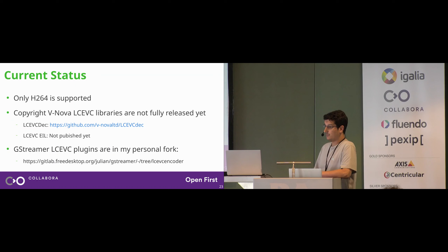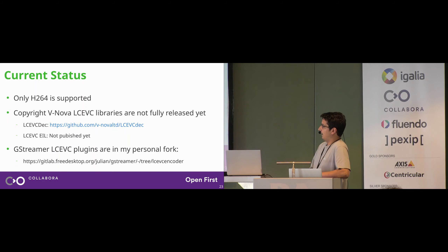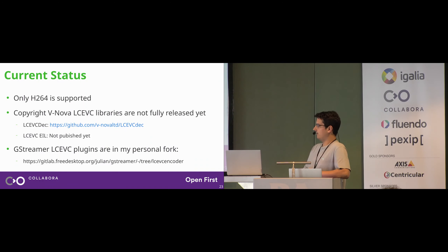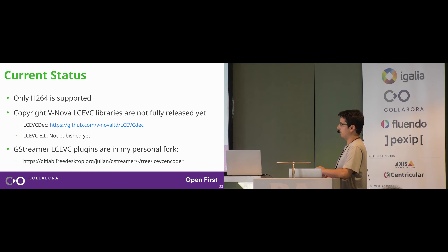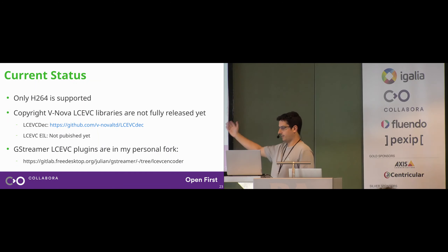The current status: this is not merged, there's not even a merge request — there's only a branch in my GStreamer fork. Only H.264 is supported and it's a work in progress. The next steps are to add support for more codecs, but you need the LC-EVC dec and LC-EVC EIL libraries installed. The LC-EVC dec library has been released, but the EIL library is not released yet — Vinova will release it soon, at which point I'll create a merge request. The branch is called lcevc-encoder and it has a decoder too.